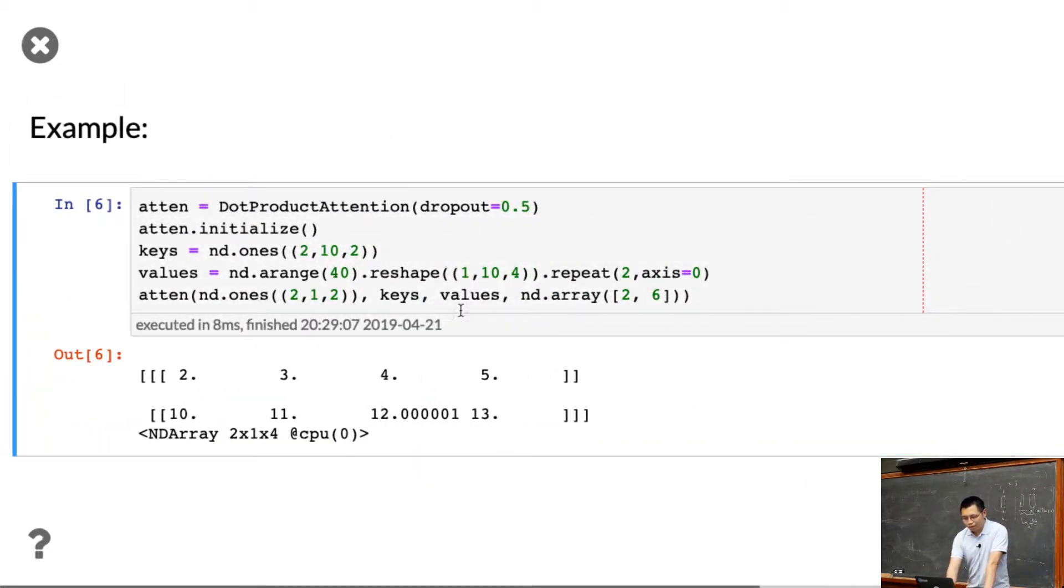Take an example here, we do a dropout equal to a half, and given the keys, batch size is equal to two, ten keys, the key's length is two. We first create a single value, for example, then ten values, this is the ten, should be equal to the number of keys we have. The value can have a different length. We put a four here. And we repeat it by two times to get the two identical examples. So apply attention here. This is a query. Batch size is equal to two, because we need to match the batch size. And we only have a single query here, one, and the query length is equal to two, because the key length is equal to two. Then give keys, give values, and the value length means that the first example, we only consider the first two key value pairs. The second example, we will consider six examples.